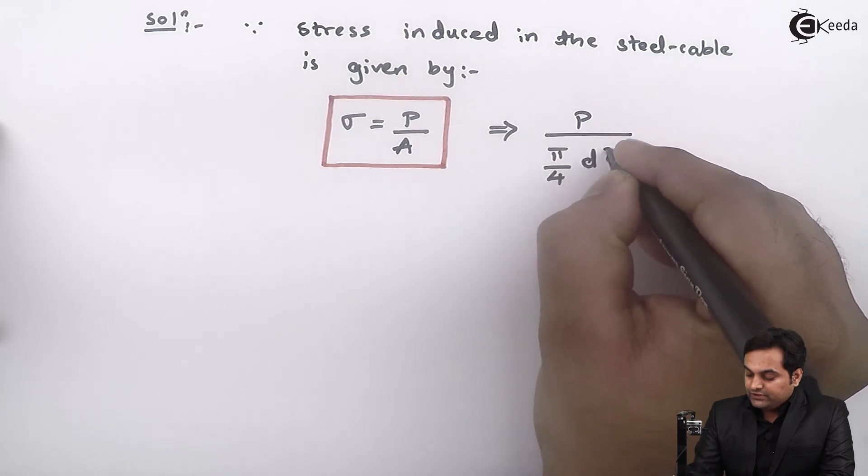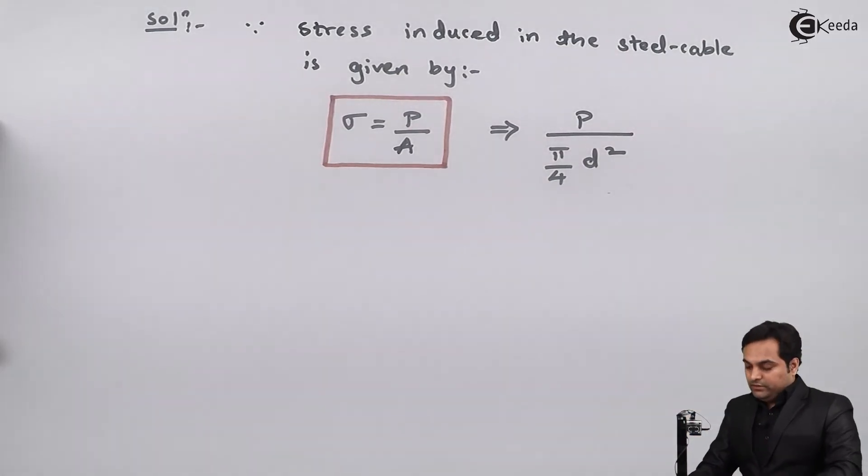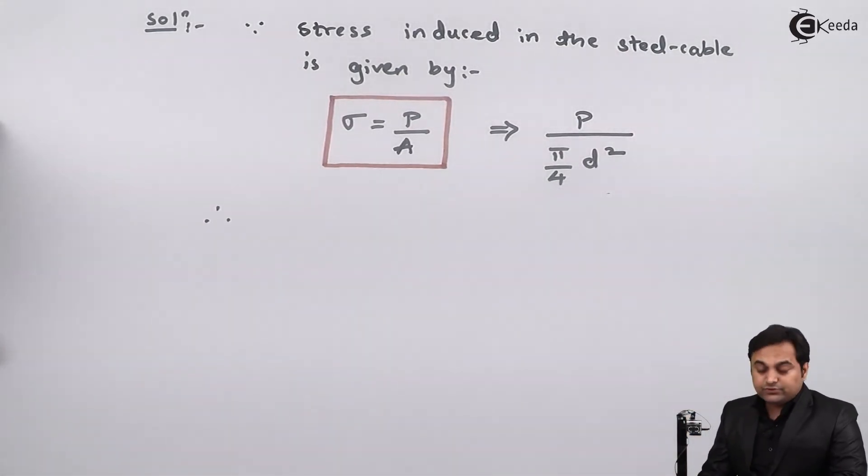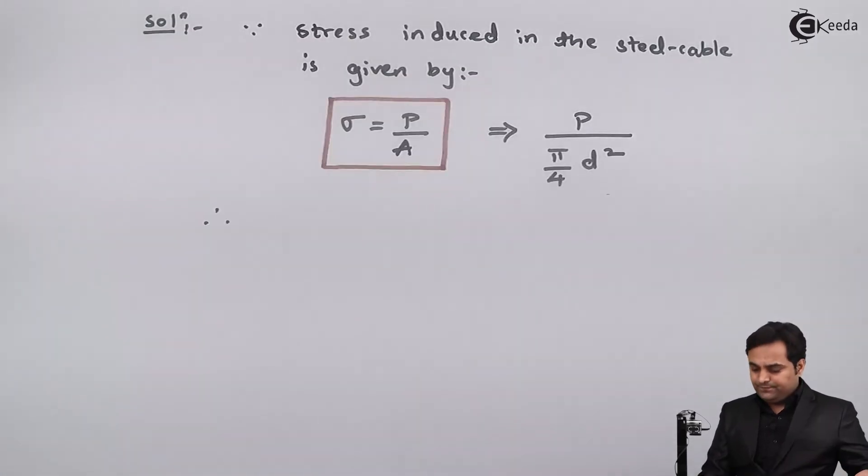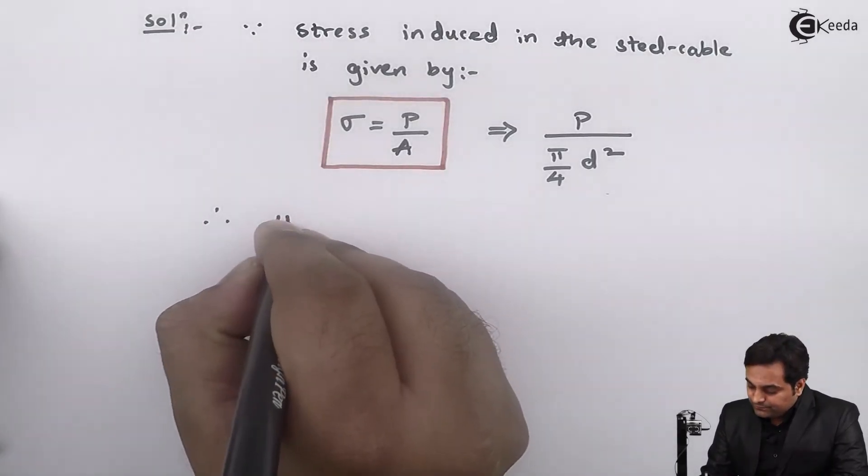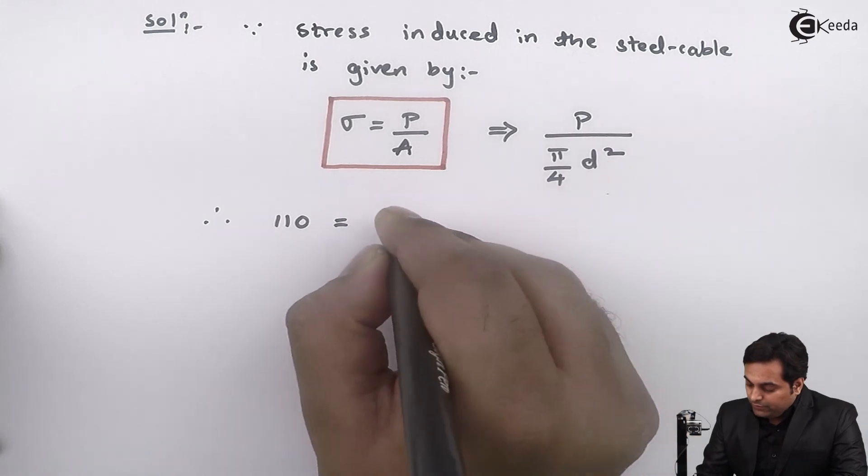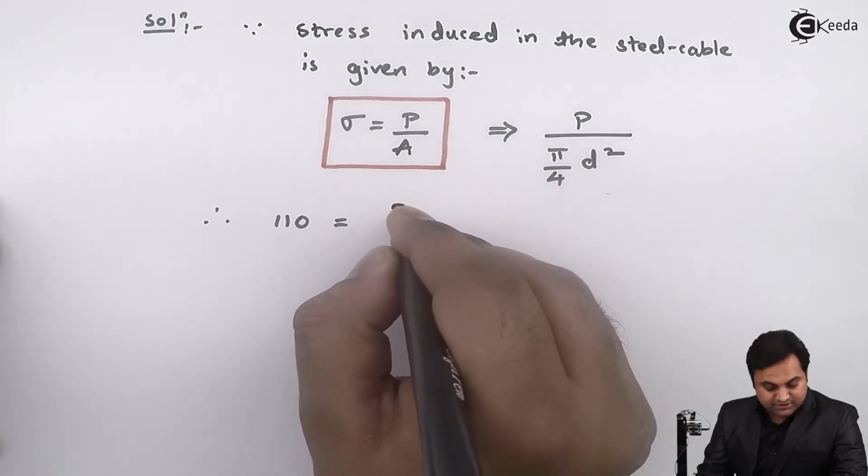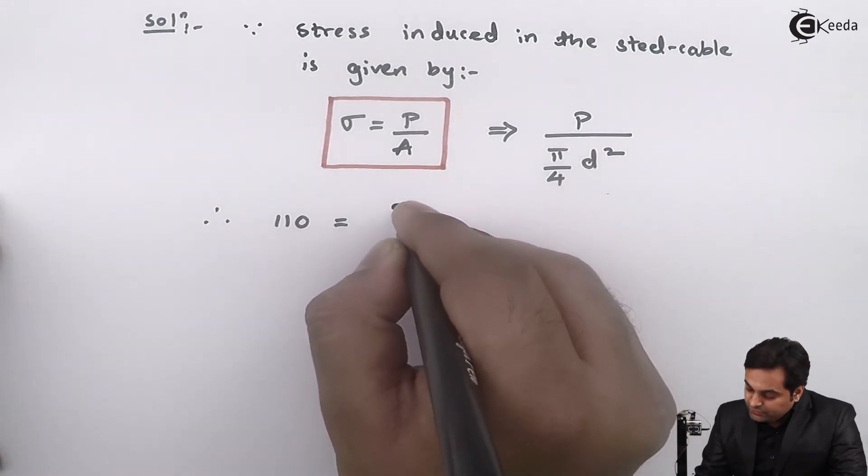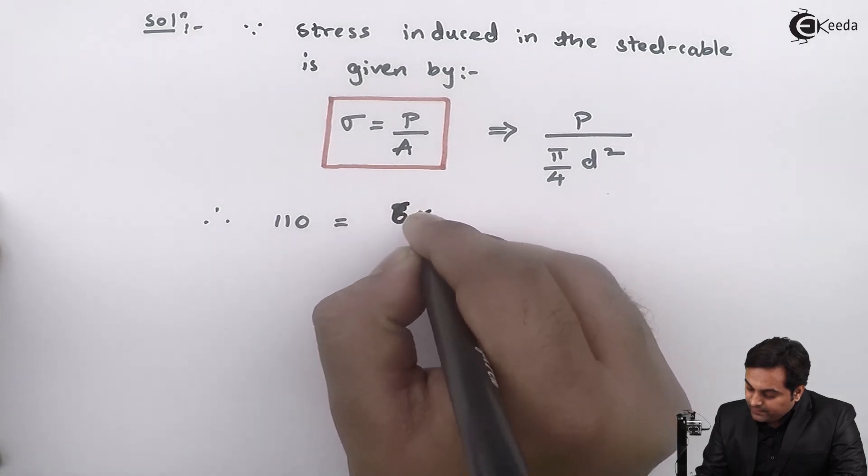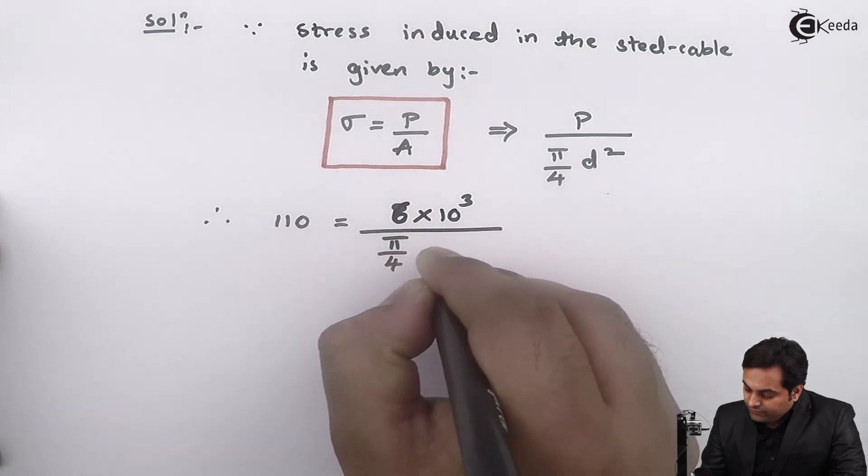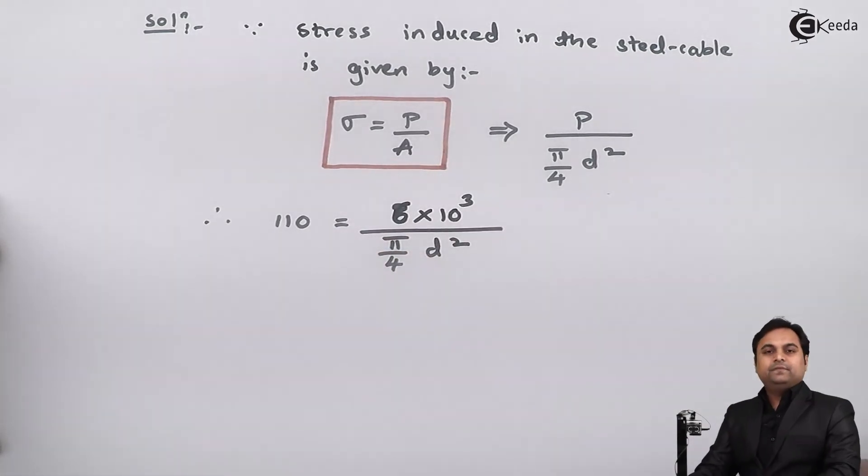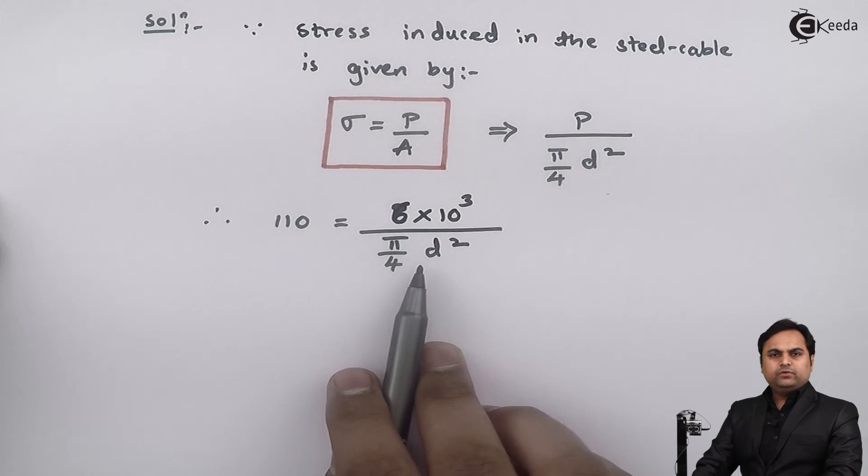So therefore stress can also be equal to P upon area, which is pi by 4 d squared. Now I'll put the values. Stress is given in the problem, it is 110 Newtons per millimeter square. Load P which is given as 6 kilonewtons, so I'll write down 6 times 10 to the power 3 Newtons upon pi by 4 d squared.